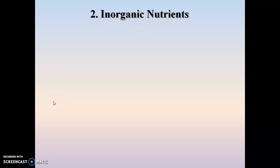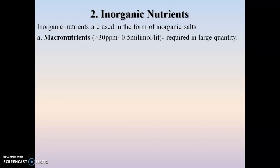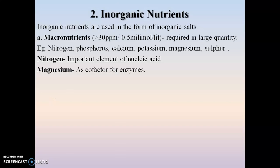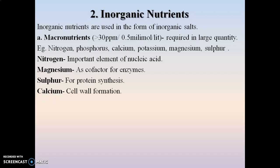The second important component of the nutrient media is inorganic nutrients, added in the form of inorganic salts. These include macronutrients and micronutrients. Macronutrients are required in large quantities — more than 30 ppm, or 0.5 millimole per liter. Examples include nitrogen, phosphorus, calcium, potassium, magnesium, and sulfur. Nitrogen is an important element of nucleic acids, required for growth and development. Magnesium acts as a co-factor for enzymes, sulfur is used for protein synthesis, and calcium is used for cell wall formation. Calcium, magnesium, and potassium are required for cell metabolism.